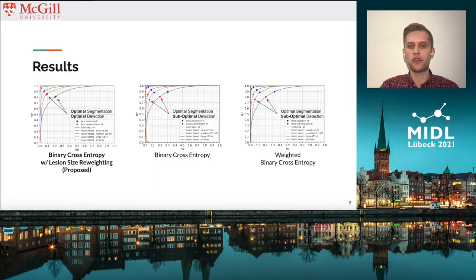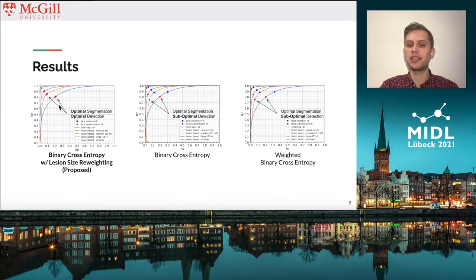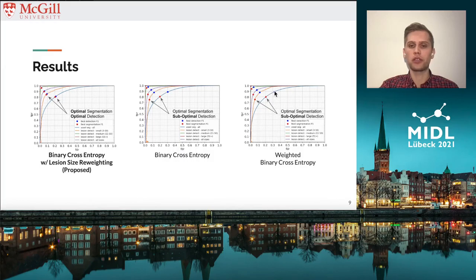Here we show true positive rate vs. false detection rate curves for binary cross-entropy with the proposed lesion size re-weighing, baselined against binary cross-entropy and weighted binary cross-entropy. In the case of the proposed method, we can see that the optimal operating points for segmentation and detection overlap, achieving optimal segmentation and detection performance at a single operating point. This is in contrast to binary cross-entropy and weighted binary cross-entropy, for which the optimal operating points are comparatively far apart and which show suboptimal detection performance at the optimal segmentation operating point.